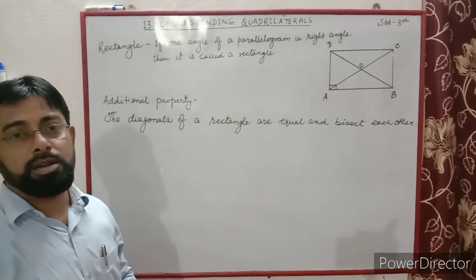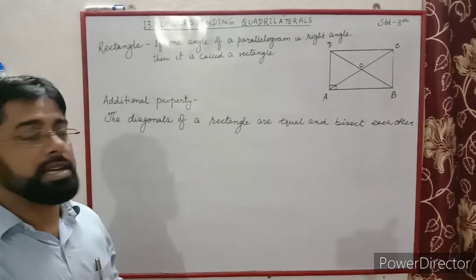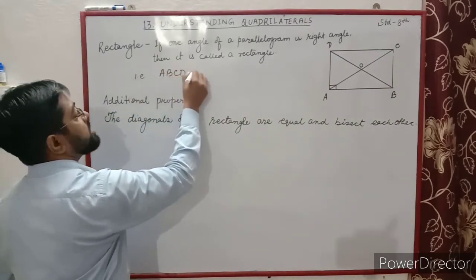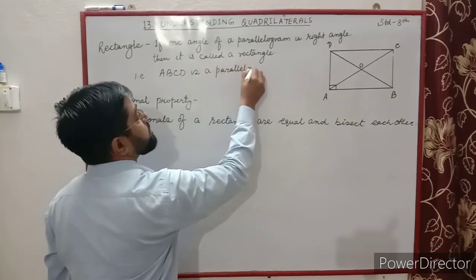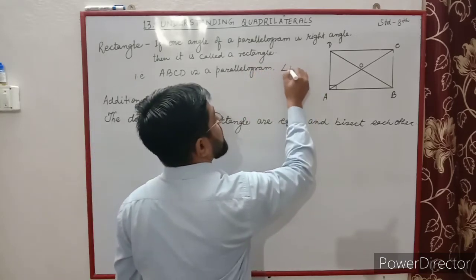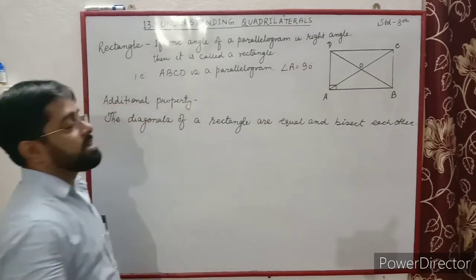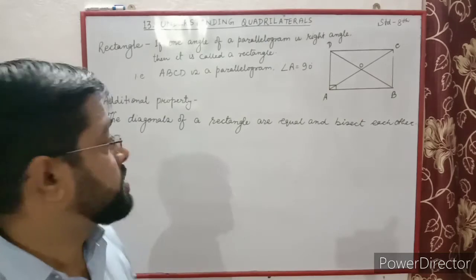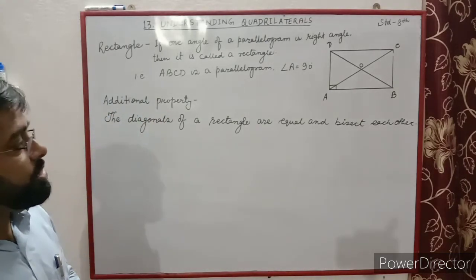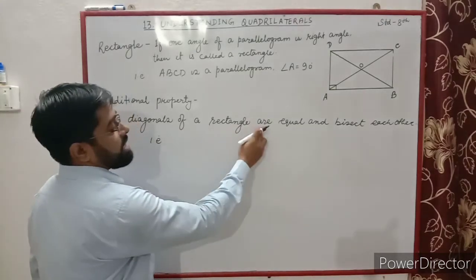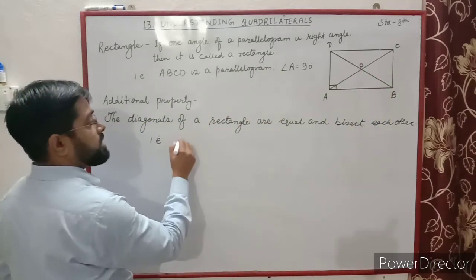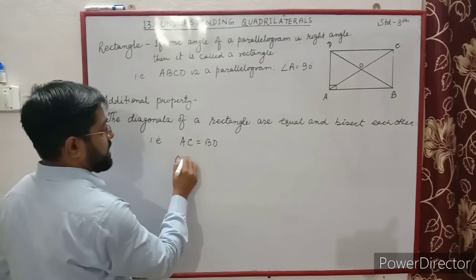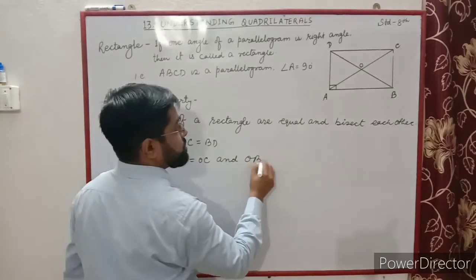Rectangle. If one angle of a parallelogram is a right angle, then it is called a rectangle. From the figure, ABCD is a parallelogram in which angle A is equal to 90 degrees, so it is called a rectangle. Since every rectangle is a parallelogram, it has all properties of a parallelogram. Additional property: the diagonals of a rectangle are equal. AC and BD are two diagonals and both are equal, so AC is equal to BD. They also bisect each other: OA equals OC and OB equals OD.